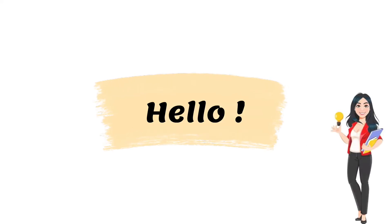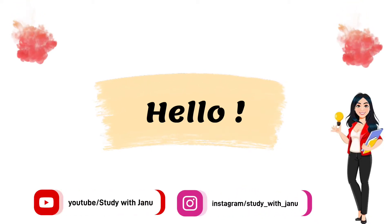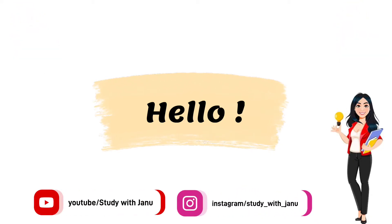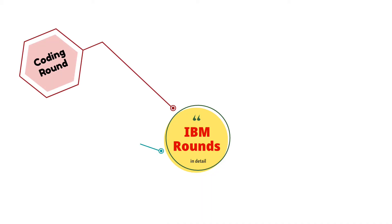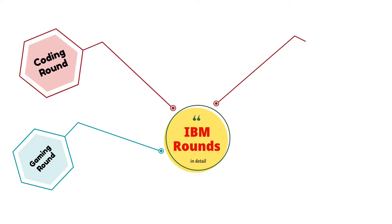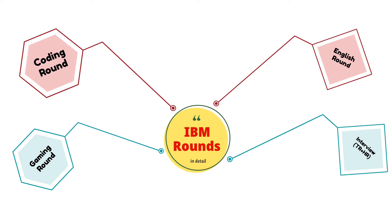Hello everyone, I'm back with yet another informative video about the IBM recruitment process. Let's see the multiple rounds in this particular recruitment process: the first one is coding round, the second one is gaming round, the third one is English round, and the final round is interview, which is a combination of TR plus HR.